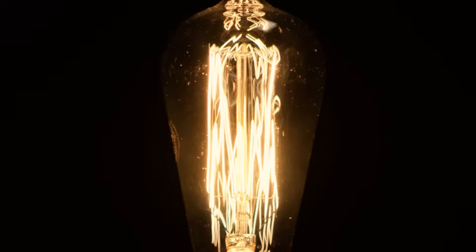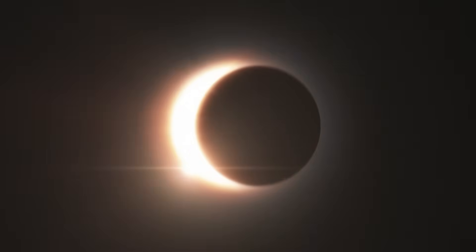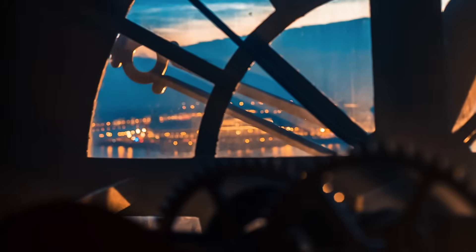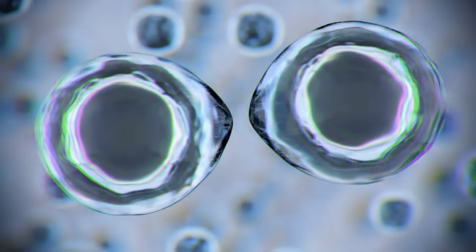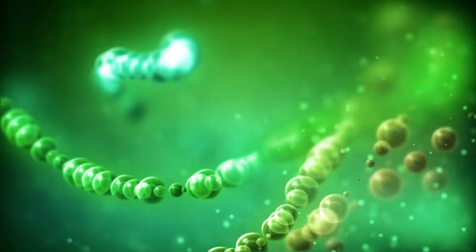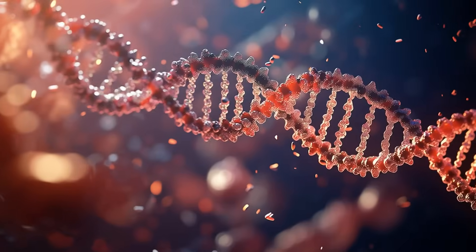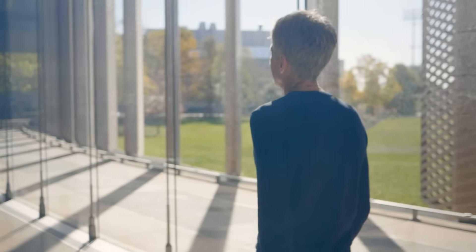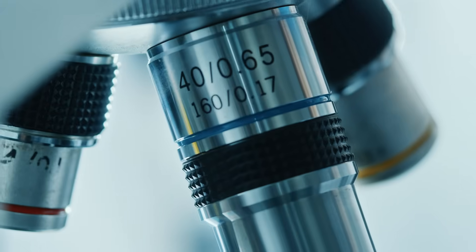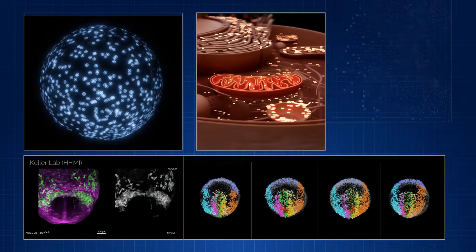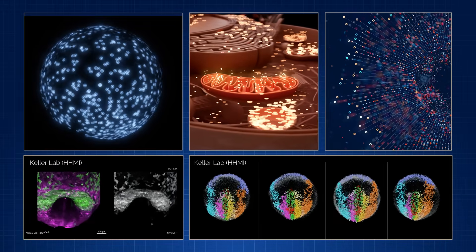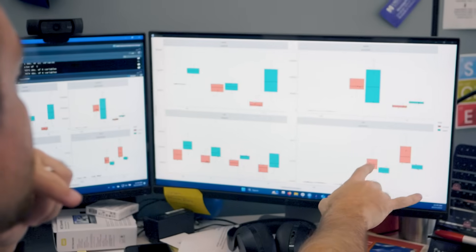Before you can fix anything, you have to see it. Aging is all around us, but most of it happens in places our eyes can't reach—inside cells, inside molecules, moment by moment. Our work begins with better measurements, building the lenses, microphones, and maps that make the invisible visible. When you can measure aging precisely, you can ask better